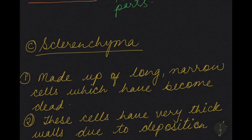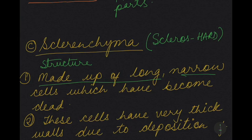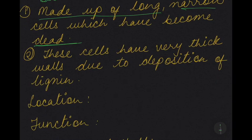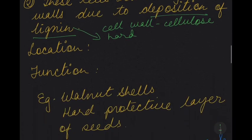Next we come to sclerenchyma. Sclerenchyma comes from the word 'scleros', which means hard. The structure: sclerenchyma cells are made up of long, narrow cells which have become dead — they are not living. These cells have very thick walls due to the deposition of lignin. The cell wall is normally made up of cellulose, but in sclerenchyma, the cells have become very thick due to lignin deposition, which hardens the cell wall.